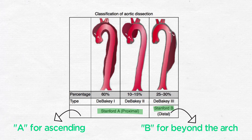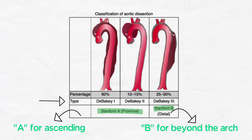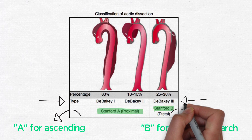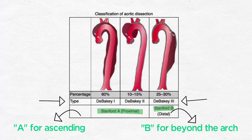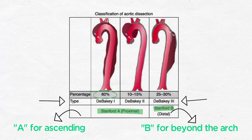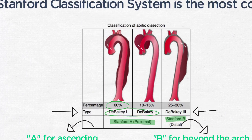Under the DeBakey system, type 1 involves the ascending and descending aorta, type 2 only the ascending aorta, and type 3 only the descending aorta. The DeBakey system is less commonly used and is a bit more cumbersome, but you should at least learn it. At least 60% of dissections are Stanford type A, which is the equivalent of DeBakey types 1 and 2.